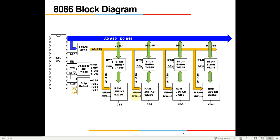Here I have connected two RAMs of 256 KB and two ROMs for this particular example — that is how it is done in most trainer kits. There will be RAM as well as ROM, both will be there. Just remember there will be 20 address lines, and the address lines and data lines are on the same pin, so they are demultiplexed — I'll cover how that is done in the theory class.